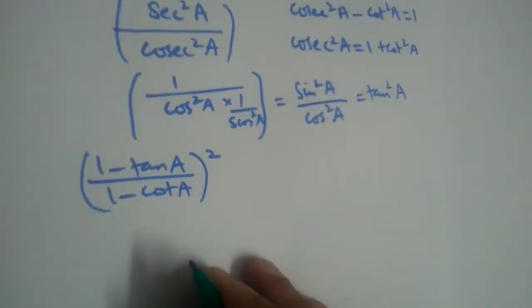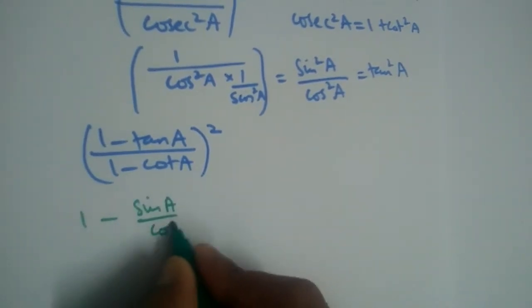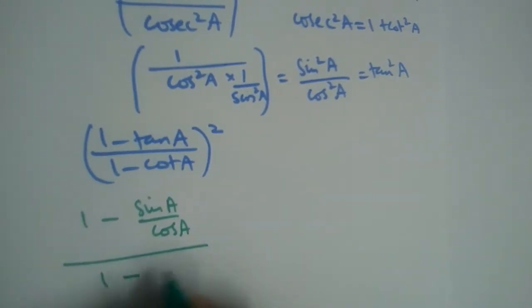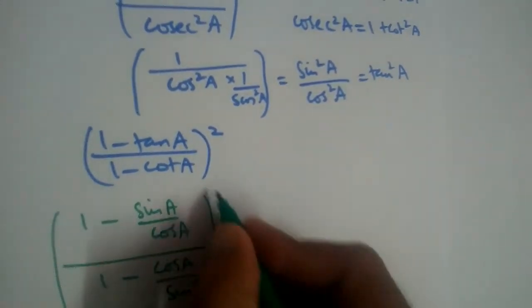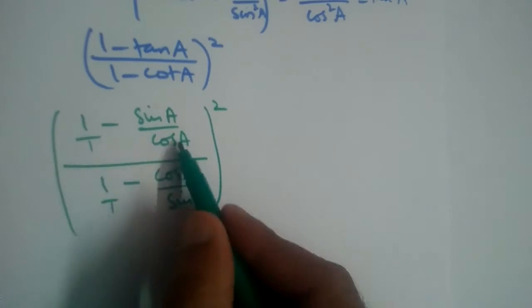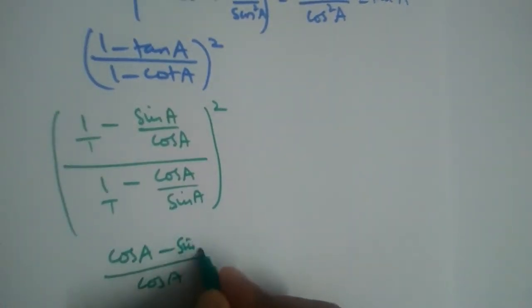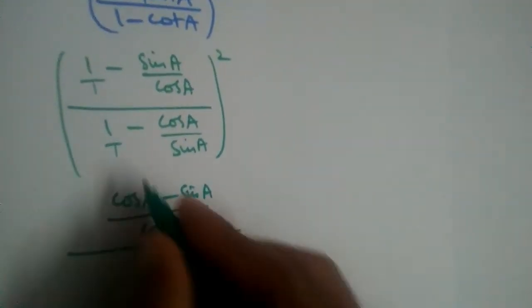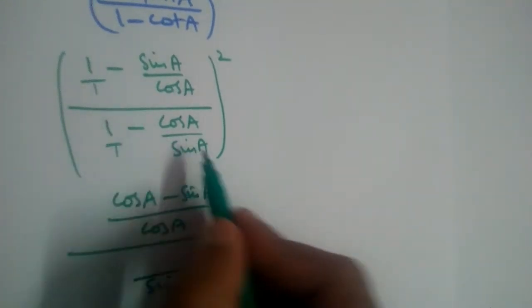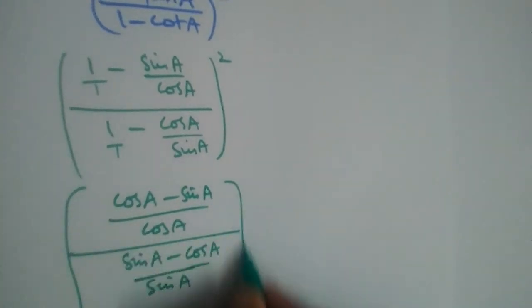We write tan a as sin/cos and cot a as cos/sin. So the expression becomes: (1 − sin/cos) / (1 − cos/sin), whole square. Simplifying the numerator: (cos − sin) / cos, and the denominator: (sin − cos) / sin.